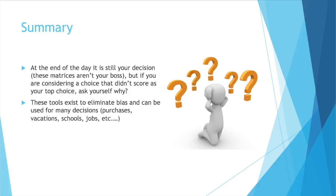Decision matrices are great for eliminating bias and can be used for almost any decision — a big purchase, a vacation, what college to go to, what job offer to take, et cetera. Any choice is good to throw some numbers at — that's kind of the whole point behind a lot of types of engineering, especially process engineering. Thank you so much for watching this Beginning Engineers video. If you liked the video, please consider subscribing or giving the video a thumbs up. I hope you now have a great tool for choosing among different options and eliminating some of your bias. Have a great day.